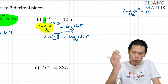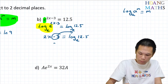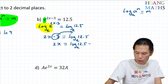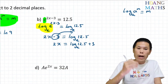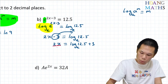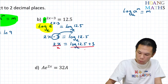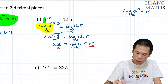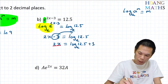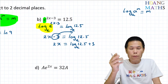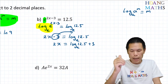So 2x minus 3 is equal to log base e of 12.5. I move the minus 3 to the other side, so it becomes plus 3: 2x is equal to log base e of 12.5 plus 3. Now I can divide by 2 on both sides. I can just put everything on the calculator — I type log base e of 12.5 plus 3 first.